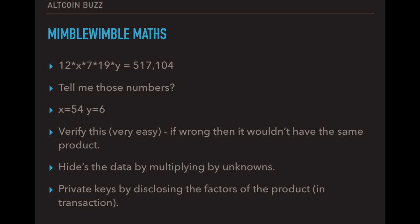So in Mimblewimble, you have this large number on the right hand side, if we look at that top bullet point. And then it's 12 times x times 7 times 19 times y, you would not be able to tell me those numbers. And also, they could be different numbers as well. So if you look, but if I tell you the numbers, so x is 54 and y equals six. Can you tell me those numbers that x and y? No, not easily at all. It's very hard. And it can be multiple ones. So if I tell you them that x equals 54 and y equals six, to verify this, it's so easy. All you do is you divide the last number by either one of those, and it should go into it. And if it's wrong, you multiply them all together, it won't be the right product. So this is how Mimblewimble hides the data, it hides the data by multiplying by unknowns. And these unknowns are unknown to everyone else, but they're known only to the receiver and the sender.